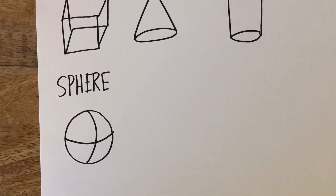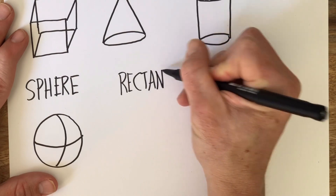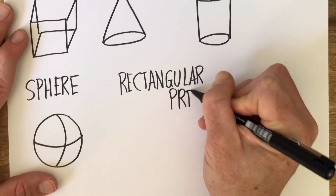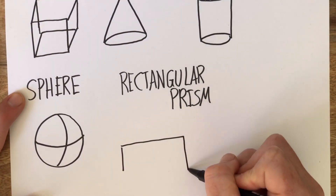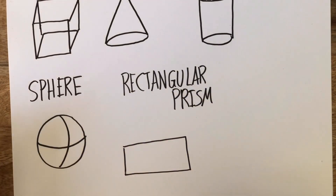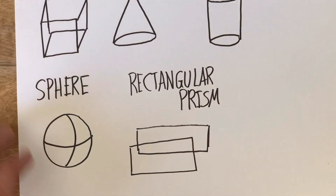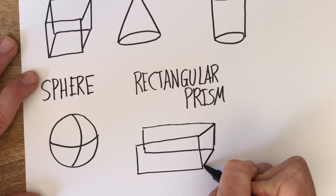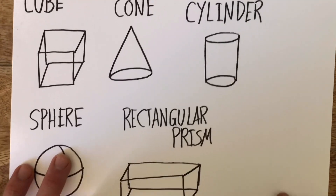The last shape to draw is a rectangular prism — that's a very big word. I'm going to make a rectangle, and we know it's a rectangle because it's short short long long, same same long long same same. Then I move up and over: short short long long. Remember our corners on our cube — we do the same thing on our rectangular prism: connect the corner, connect the corner, connect the corner, and connect the corner. That's my rectangular prism.